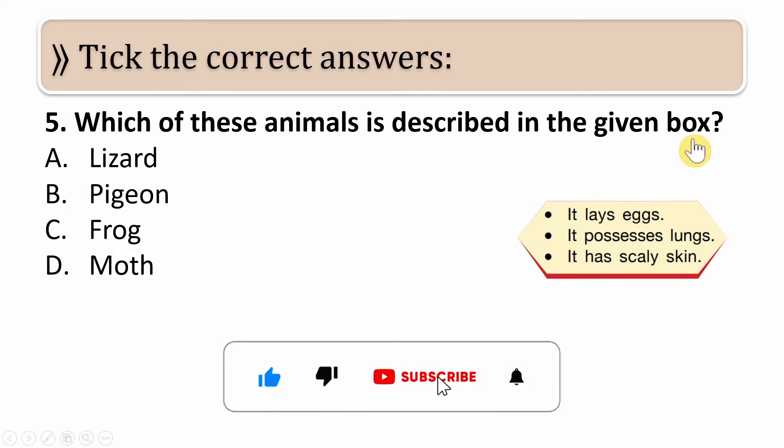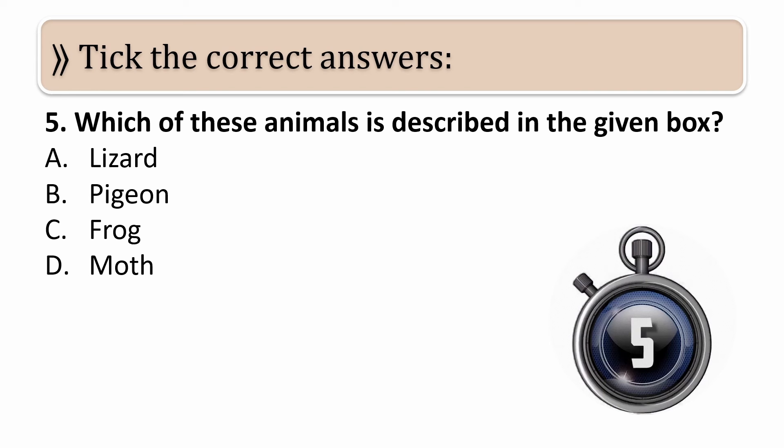Next question: Which of these animals is described in the given box? Options are lizard, pigeon, frog, moth. And the box says: it lays eggs, it possesses lungs, it has scaly skin. So which of these animals have these features? Your time starts now.